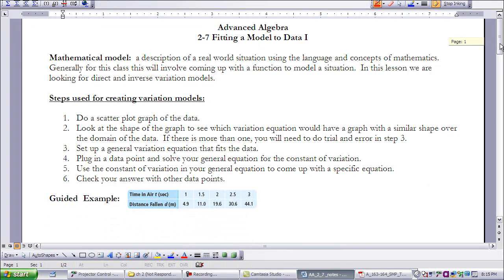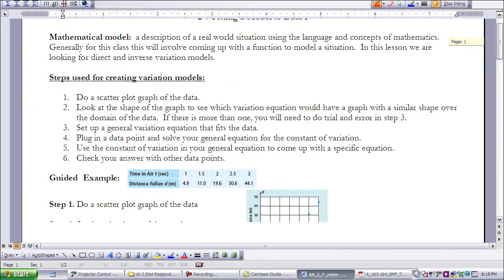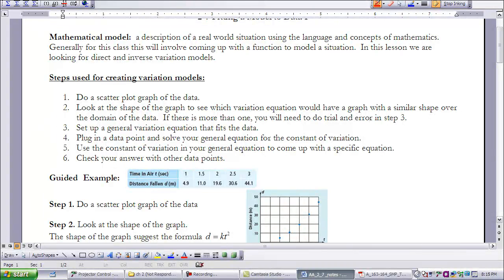We have come up with a process to create these models. We'll go through two examples in this video to create a model given some data. The first step is to do a scatter plot of the data. We're going to look at the graph. We just got done studying several variation equations or functions and we looked at what the graph looked like. So now we should be able to see which graph matches the function. If there's more than one, you will need to do trial and error in step three.